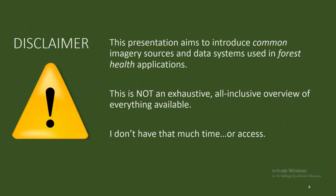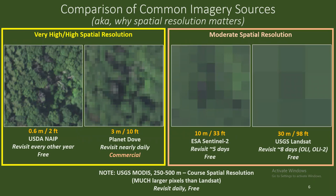This presentation is not going to cover absolutely everything out there — I'm just going to highlight some things that I think are the most important and accessible right now. The first thing we need to talk about is spatial resolution, which roughly translates into what you can see in an image depending on the size of the pixels. In the yellow box are examples of what we call high spatial resolution. For example, in NAIP imagery, which is that picture on the far left, each pixel represents an area on the ground of about two feet. At this resolution you can see individual trees — here are some oak trees that died of oak wilt.